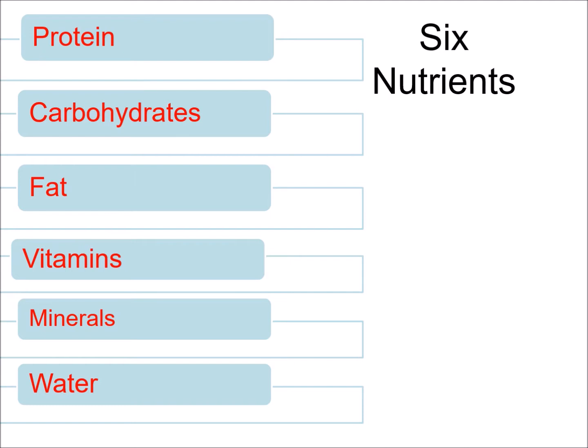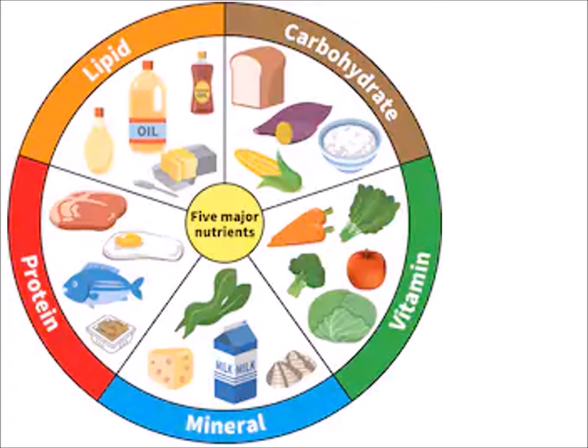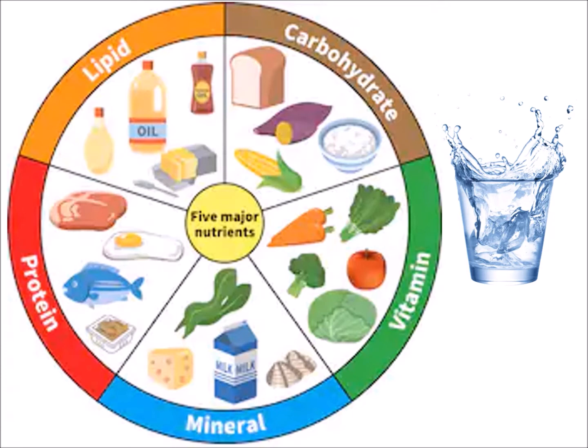There are 6 nutrients: protein, carbohydrate, fat, vitamins, minerals and water. These are the 6 major nutrients — 5 major nutrients with water.